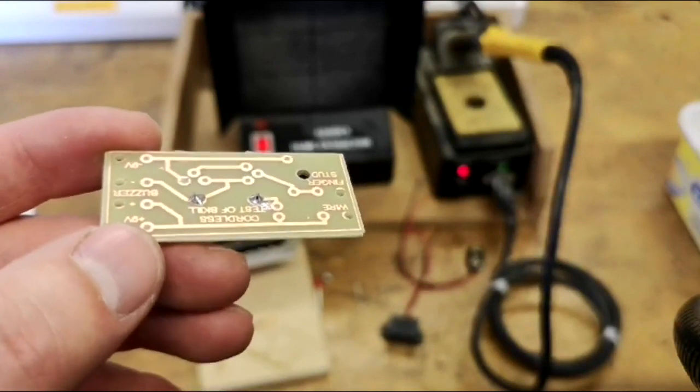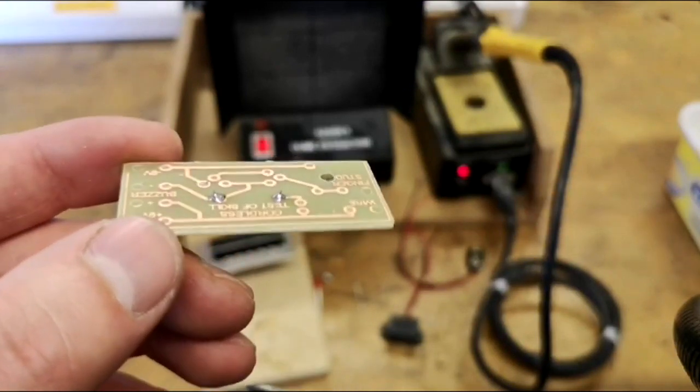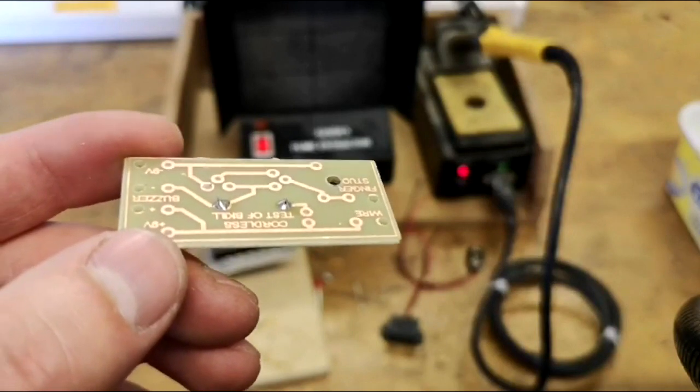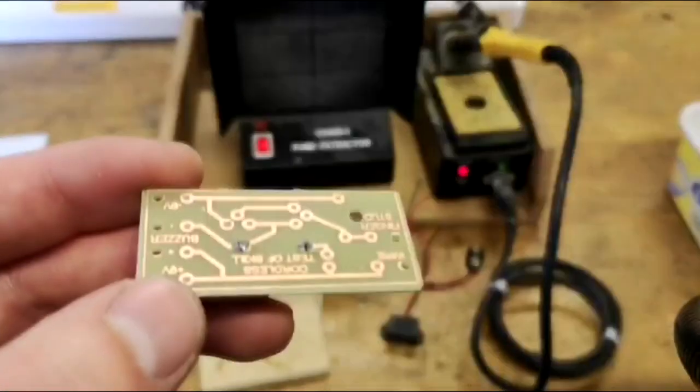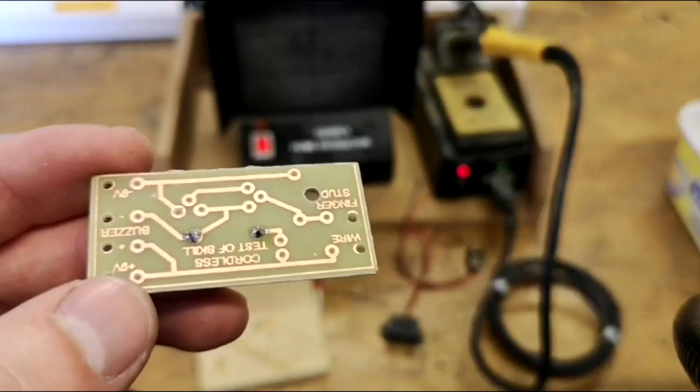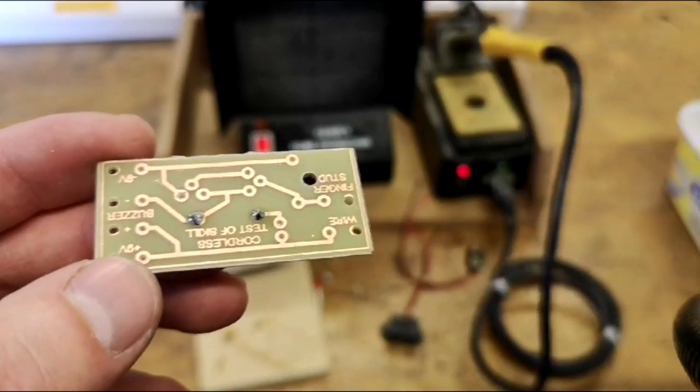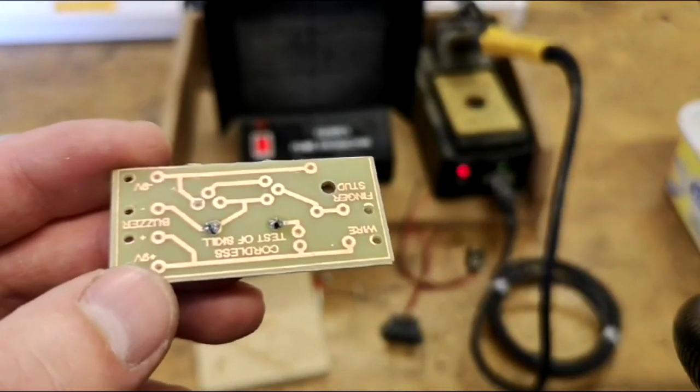At this point, you're going to then go round and solder all of the components in place. Remember that resistors don't matter which way in they go, whereas your LED and your transistors must be located correctly, otherwise they will not function.